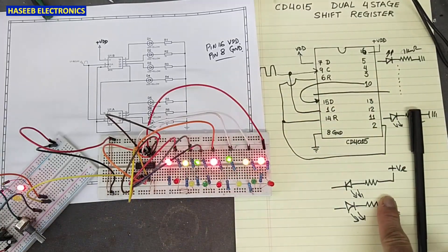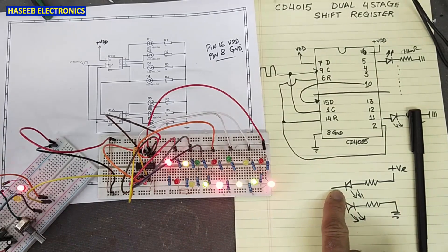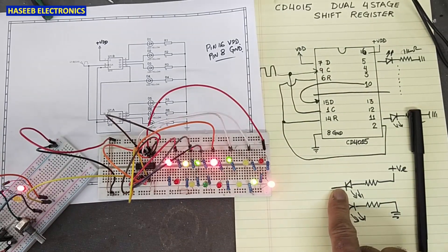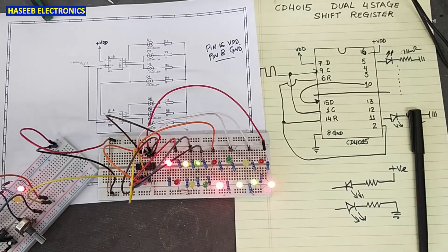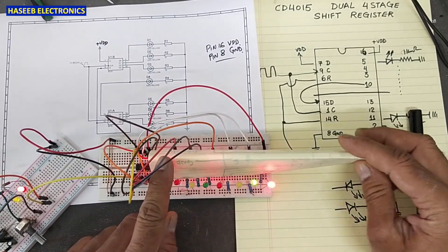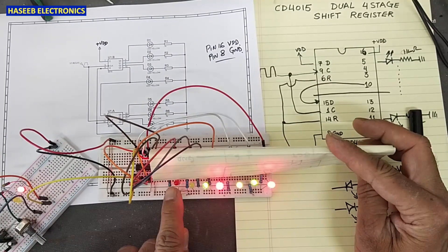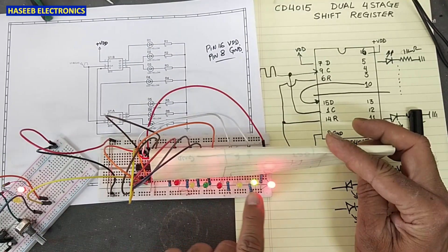But if we will configure in this way, we connect output of the IC to the cathode and we connect a resistor to the anode. So, how this IC will work. All the LEDs will turn on and then it will turn off one by one.